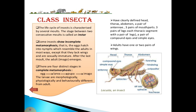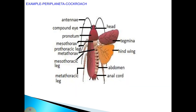Adults have three parts — head, thorax, and abdomen — a pair of antennae, three pairs of mouthparts, three pairs of legs, a pair of compound eyes, and simple eyes. Adults also have one or two pairs of wings. An example is Periplaneta, the cockroach.